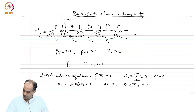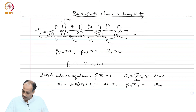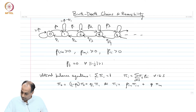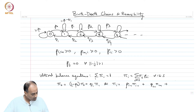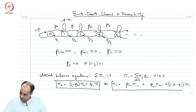So we can write: pi_i = P_{i-1}*pi_{i-1} + Q_{i+1}*pi_{i+1} + (1 - P_i - Q_i)*pi_i, where I have used the notation Q_i for the probability of death. This holds for i greater than or equal to 1. So we have these two equations.